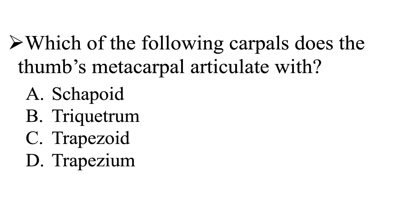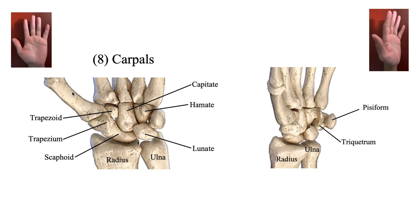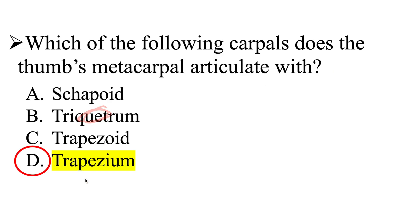Now let's take a look at this question again: which of the following carpals does the thumb's metacarpal articulate with? The thumb's metacarpal articulates with the trapezium, making the trapezio-metacarpal joint. The trapezium is the correct answer.